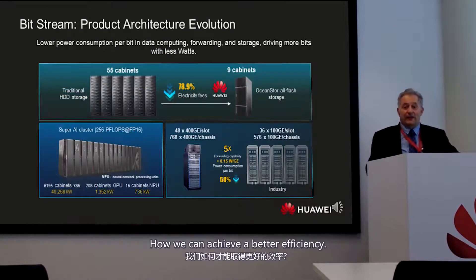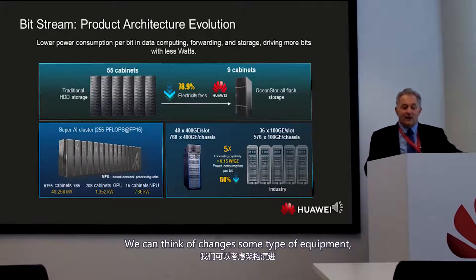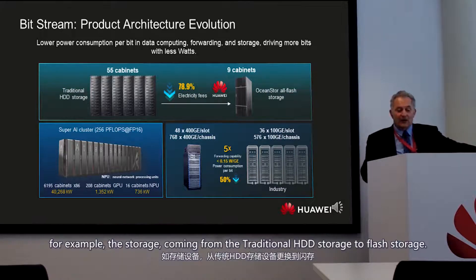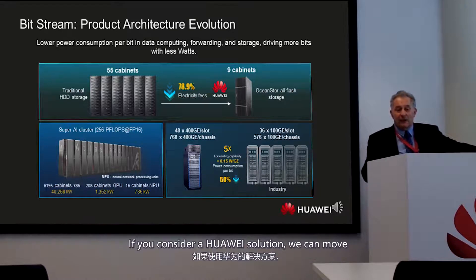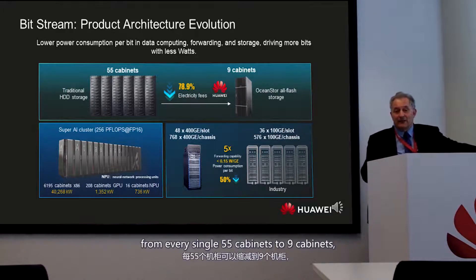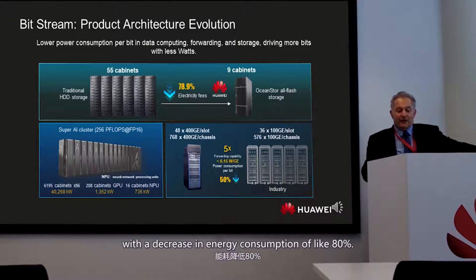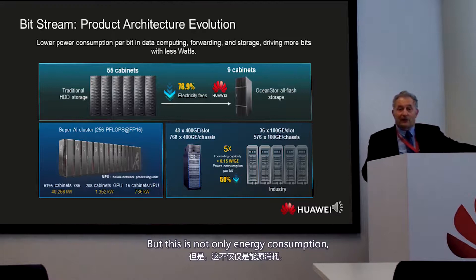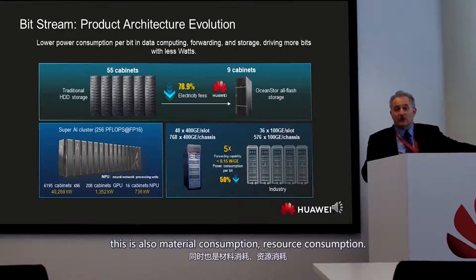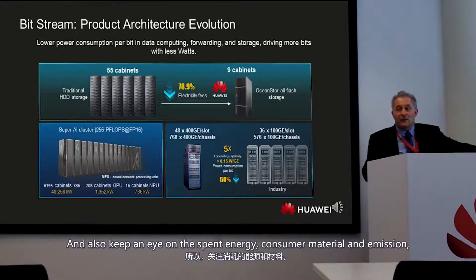How can we achieve better efficiency? Thinking about storage, we can move from traditional HDD storage to flash storage. Using a Huawei solution as an example, at the same capacity we can go from 50 cabinets down to 9 cabinets, with a decrease in energy consumption of around 80%. This also reduces material and resource consumption, and building fewer cabinets means less CO2 emission.